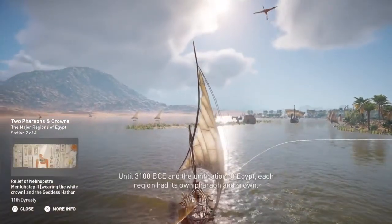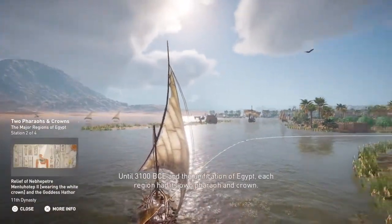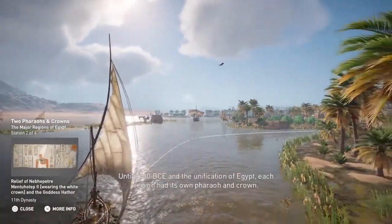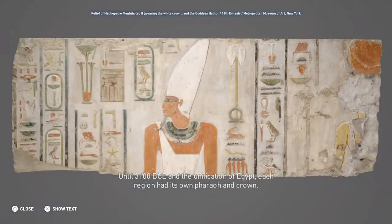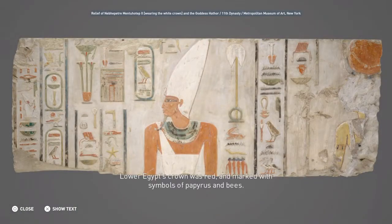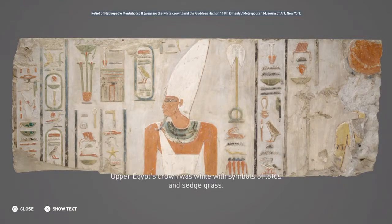Until 3100 BCE and the unification of Egypt, each region had its own pharaoh and crown. Lower Egypt's crown was red, and marked with symbols of papyrus and bees. Upper Egypt's crown was white, with symbols of lotus and sedge grass.